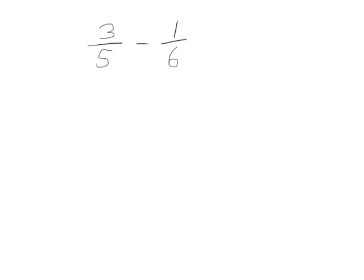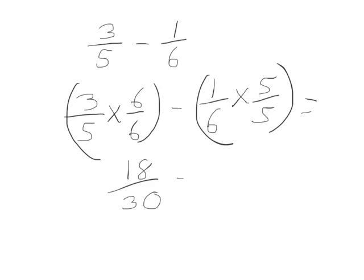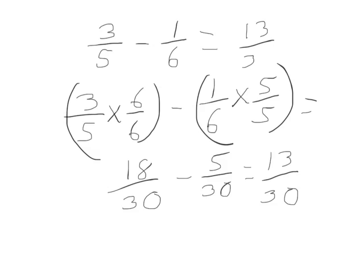In this problem, we have 3 fifths minus 1 sixth. To get a common unit, we take 3 fifths and multiply it by 6 sixths — the denominator of our other number. We take 1 sixth and multiply it by 5 fifths, the denominator of our first fraction. 3 times 6 is 18, our unit is 30. 1 times 5 is 5, and 6 times 5 is 30. 18 minus 5 is 13, so 3 fifths minus 1 sixth is 13 thirtieths.